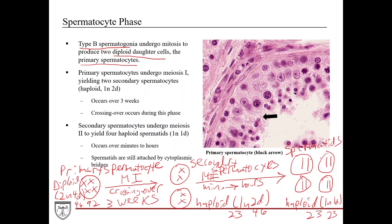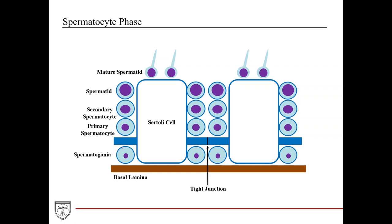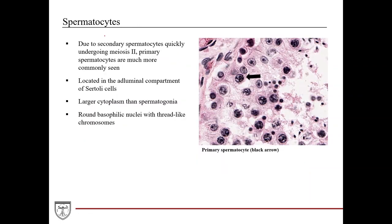The spermatids are still attached via cytoplasmic bridges throughout most of spermatogenesis. To review: spermatogonia undergo mitosis and differentiate into primary spermatocytes, which undergo meiosis 1 to generate secondary spermatocytes, which then undergo meiosis 2 to generate spermatids. Histologically, because secondary spermatocytes quickly undergo meiosis 2, you're much more likely to see primary spermatocytes on a histological section. They have a larger cytoplasm than spermatogonia and a round basophilic nucleus with thread-like chromosomes.